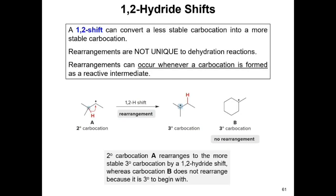The 1,2-hydride shift is similar to the 1,2-alkyl shift — the only difference is that hydrogen migrates instead of a methyl group. Both convert a less stable carbocation into a more stable one. Importantly, carbocation rearrangements are not unique to dehydration reactions; any reaction involving a carbocation, including SN1 substitution reactions, can undergo rearrangement.